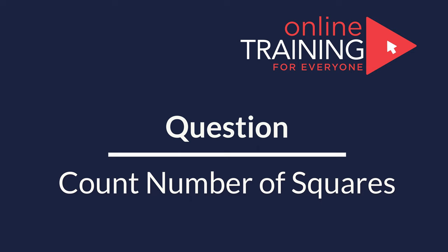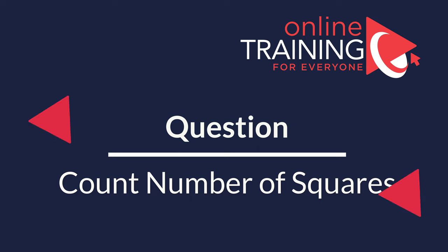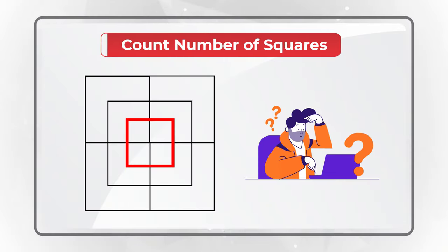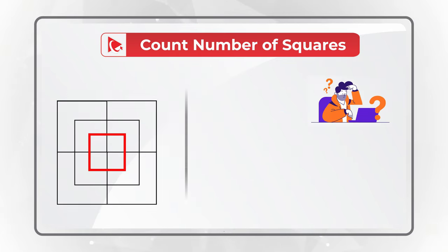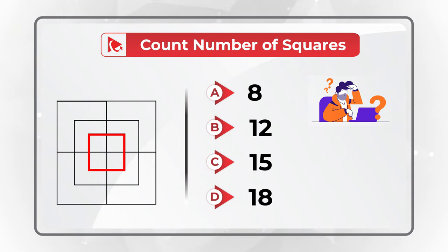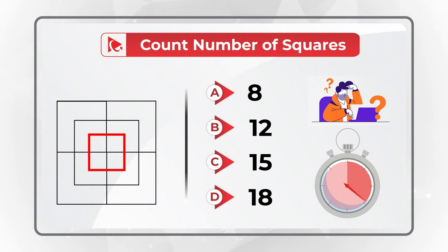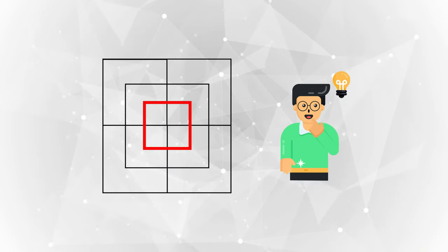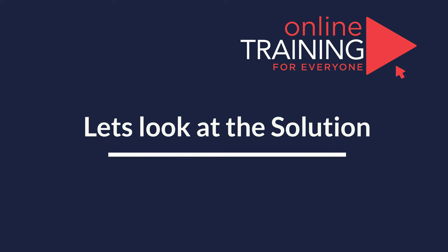Here's one of my favorite questions where you need to count the number of squares presented in the shape. You have four different choices: Choice A is 8, Choice B is 12, Choice C is 15 squares, and Choice D is 18 squares. Take a close look at the picture to see if you can come up with the right choice. Nobody is going to give you a tip during the real test, but here's a hint: look at the squares inside the squares.